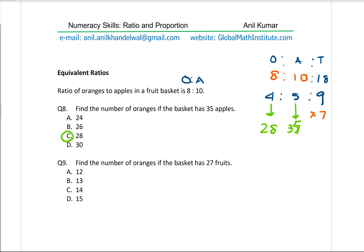Question 9: find the number of oranges if the basket has 27 fruits. The simplified ratio is 4 to 5 to 9. The total is 27 — to get 27 from 9, multiply by 3. That gives us 12 oranges and 15 apples. We are interested in the number of oranges, which is 12.